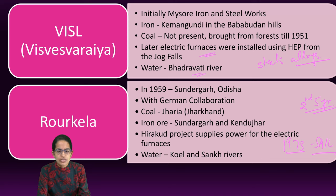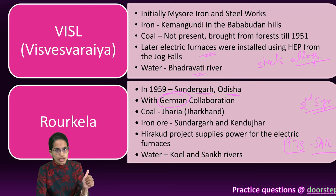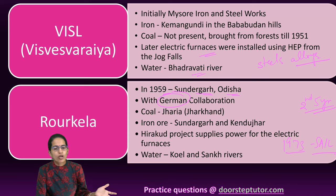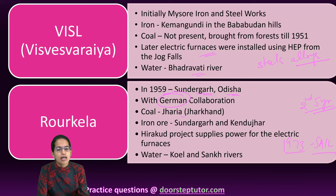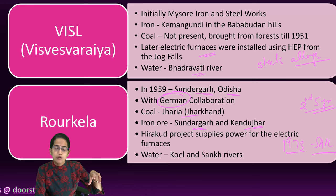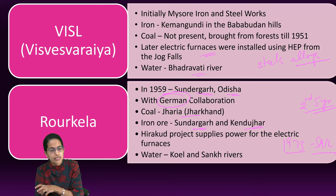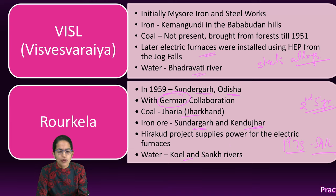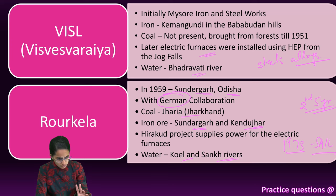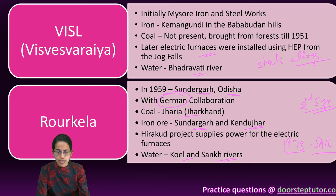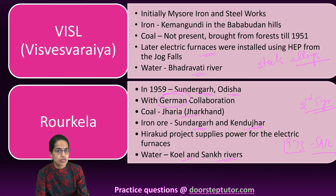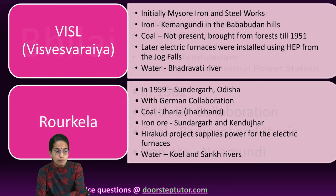Rourkela was established in Sundargarh in Odisha in 1959 with German collaboration. Coal was obtained from Jharia Mines, and iron ore from Sundargarh and Khejuri Bazar. The Hirakud Power Project supplied power to the electric furnace at Rourkela, and water came from the Koel and Sankh Rivers. Rourkela came in collaboration with Germany — a very important exam question.